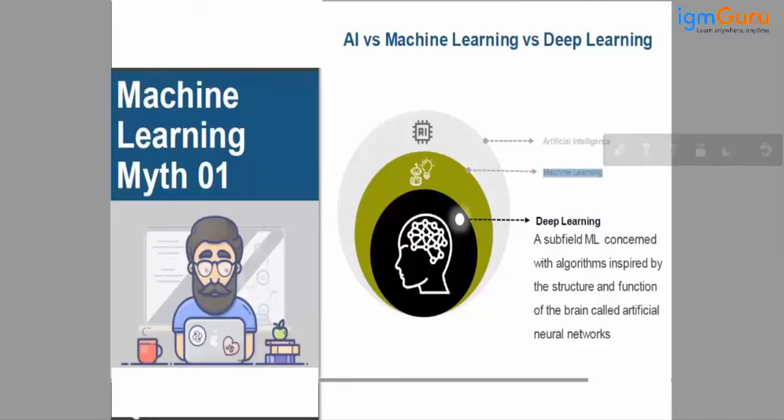So let me just draw it here on the slide once again. So here you can see artificial intelligence. This area is called artificial intelligence. And in artificial intelligence, you have machine learning.